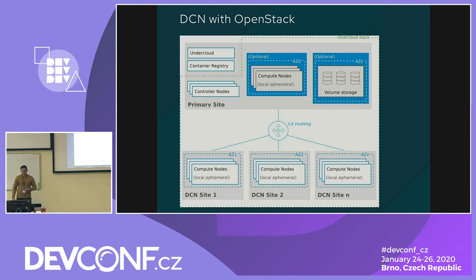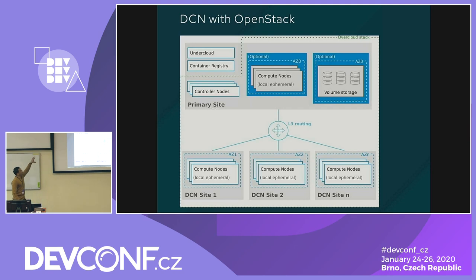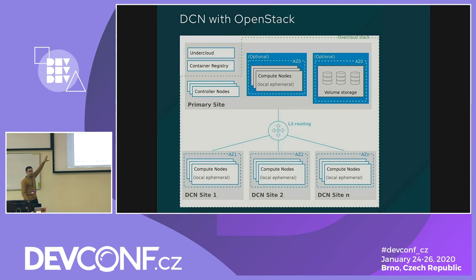DCN — Distributed Computing Network — with OpenStack. This block diagram shows the OpenStack architecture. The upper part has the undercloud, container registry, controller nodes, compute nodes, and volume nodes. This first block is your OpenStack environment.